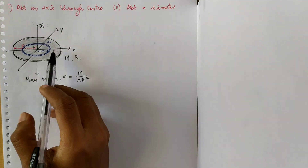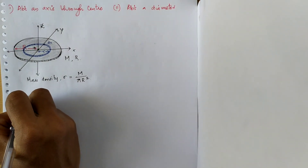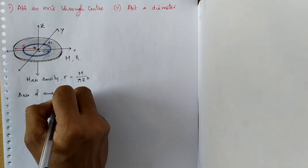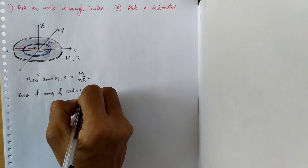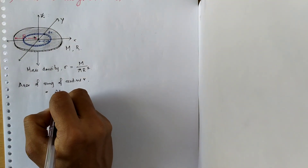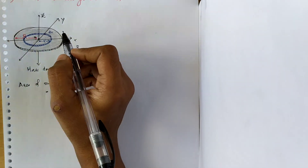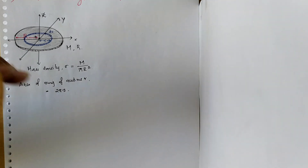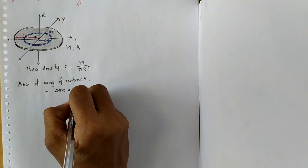We are considering one such ring of small radius r. The area of this ring is given by the circumference of the ring, which is 2 pi r, into the thickness dr — by thickness meaning this thin width. So the area of the ring is 2 pi r dr.